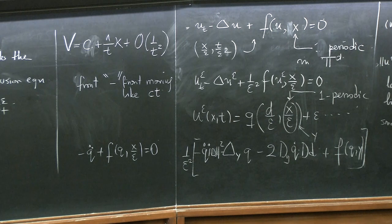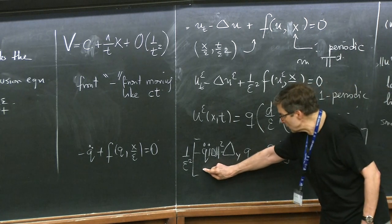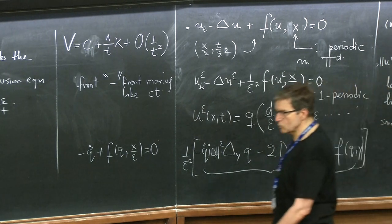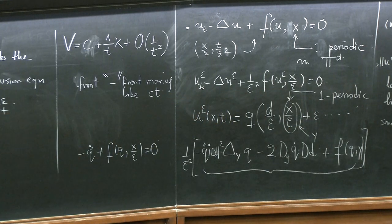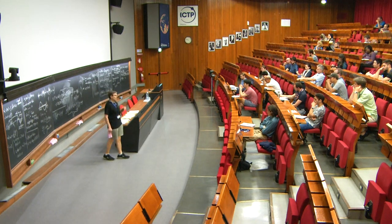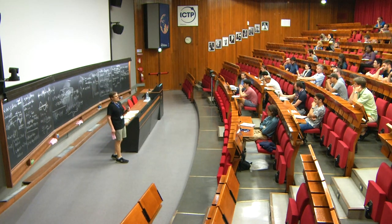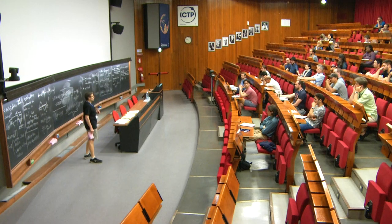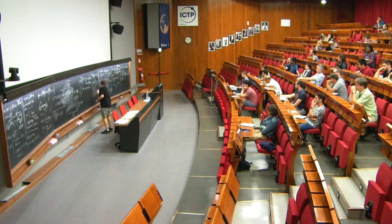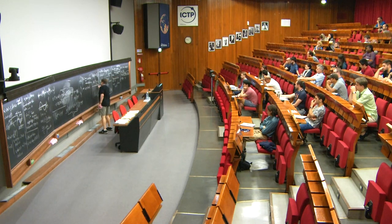To cancel the 1/epsilon squared terms, you need a Q that actually solves this equation — one that includes both the traveling wave ODE and the Laplacian in y. These objects have been studied going back to Jack Xin and reinvented many times by others. They are called pulsating waves.